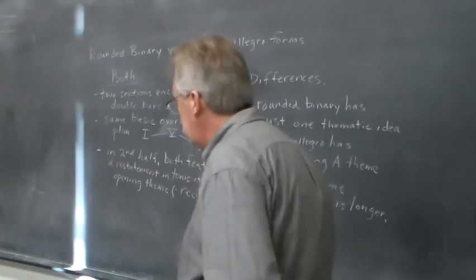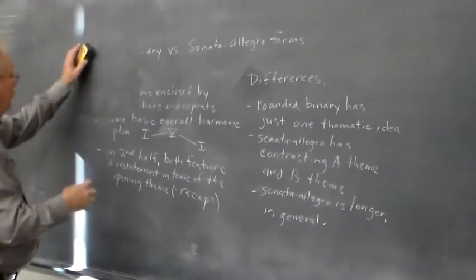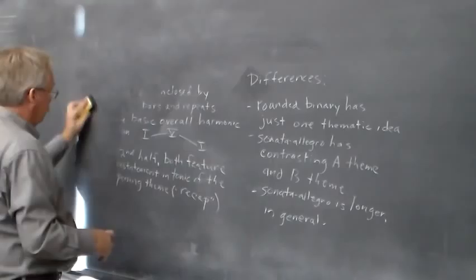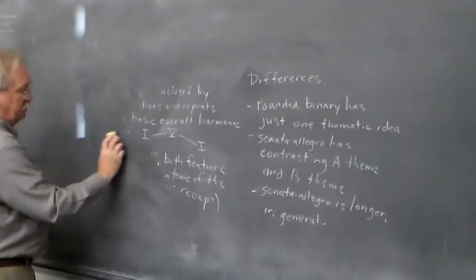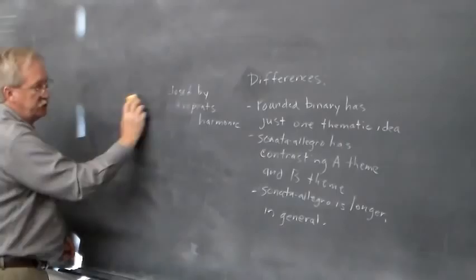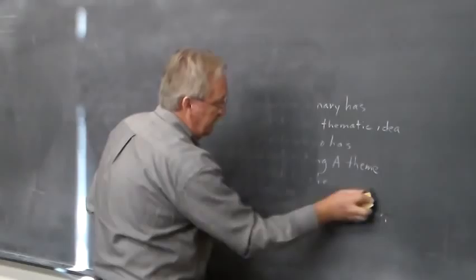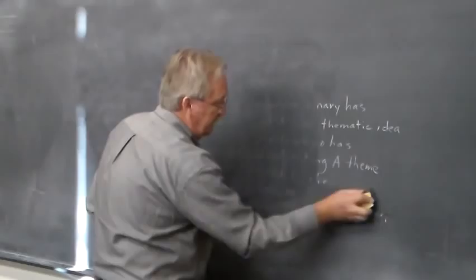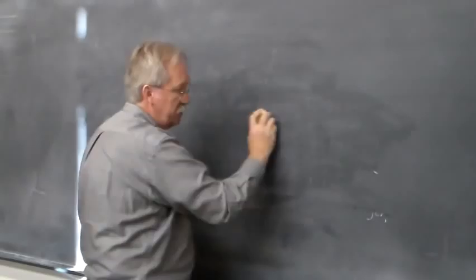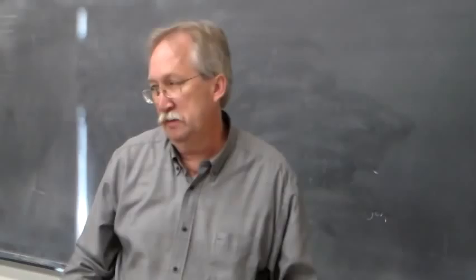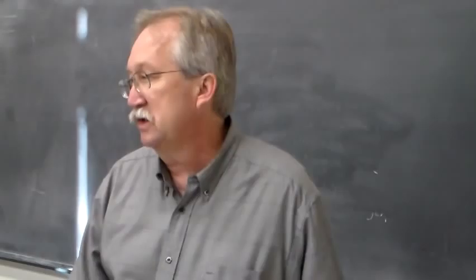We're going to now move on with our survey of great German art songs. One thing I want to say about the last work we did — the song cycle Winterreise by Schubert. That entire song cycle ends with the 24th song in a real pessimistic mood. That final song features a poem that describes an organ grinder.